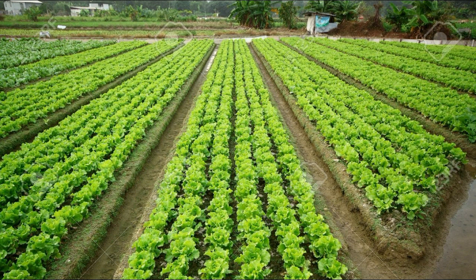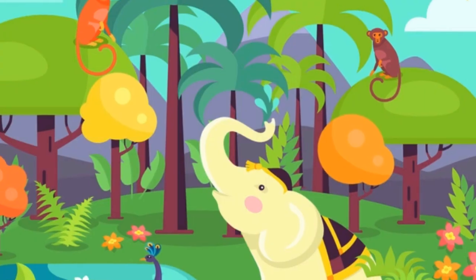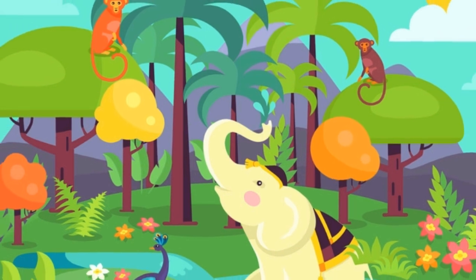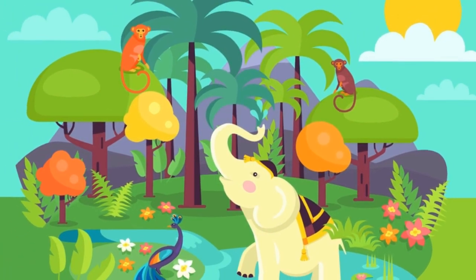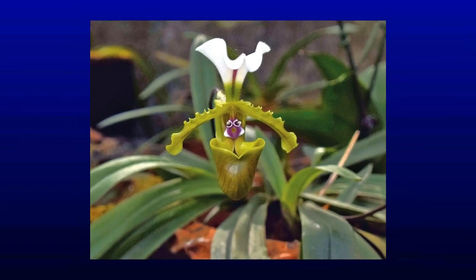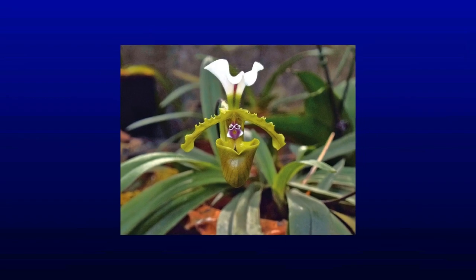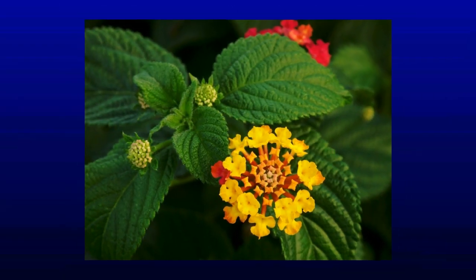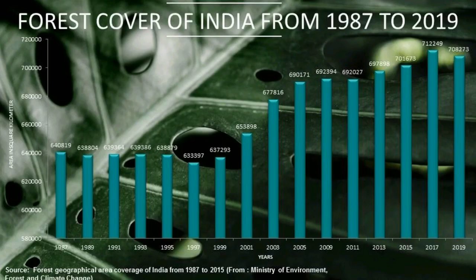Cultivated crops, fruits, and orchards form part of vegetation but not natural vegetation. India is one of the 12 mega biodiversity countries of the world, with about 47,000 plant species. India occupies 10th position in the world and 4th in Asia in terms of plant diversity.